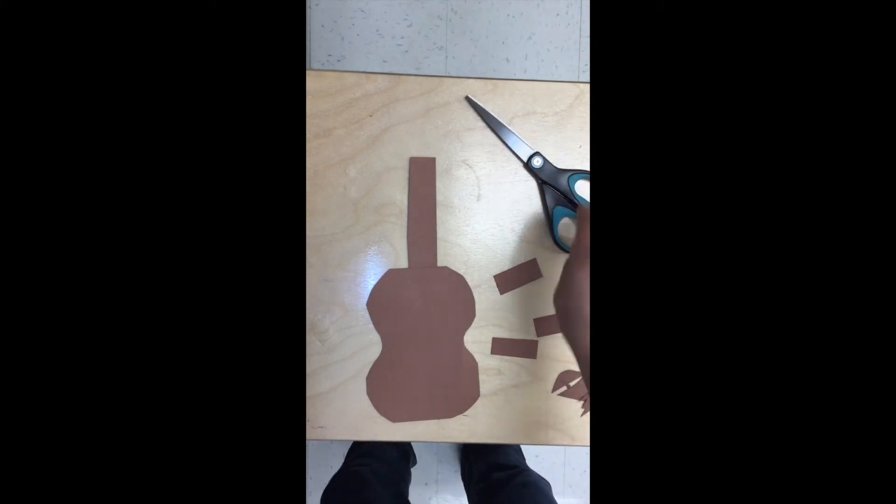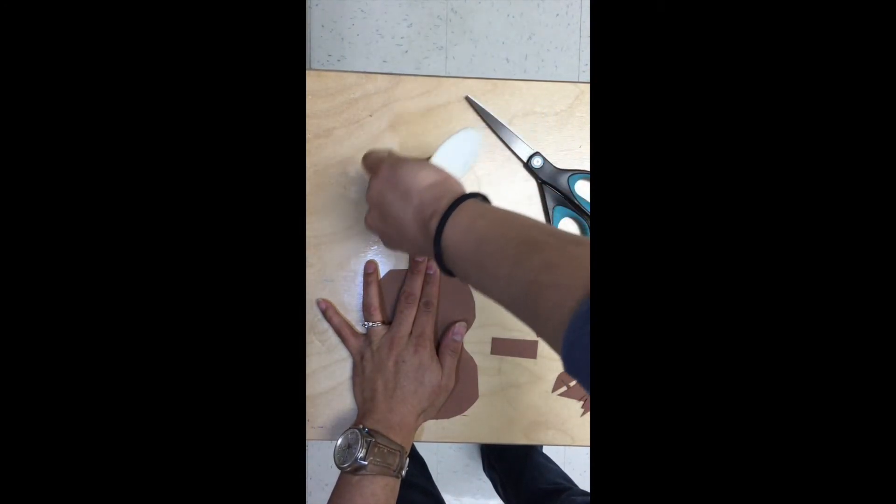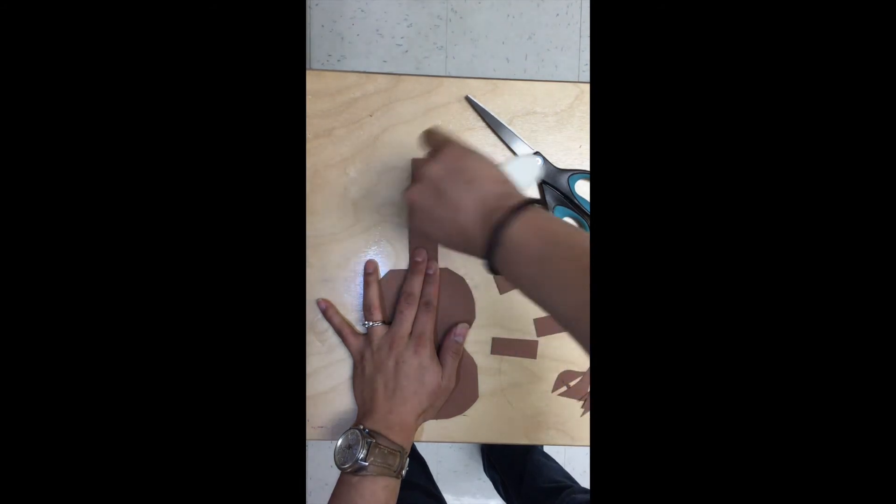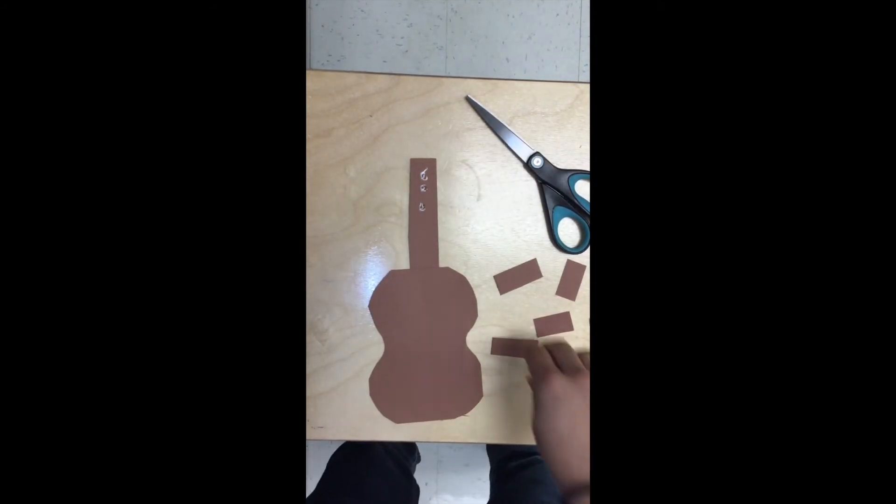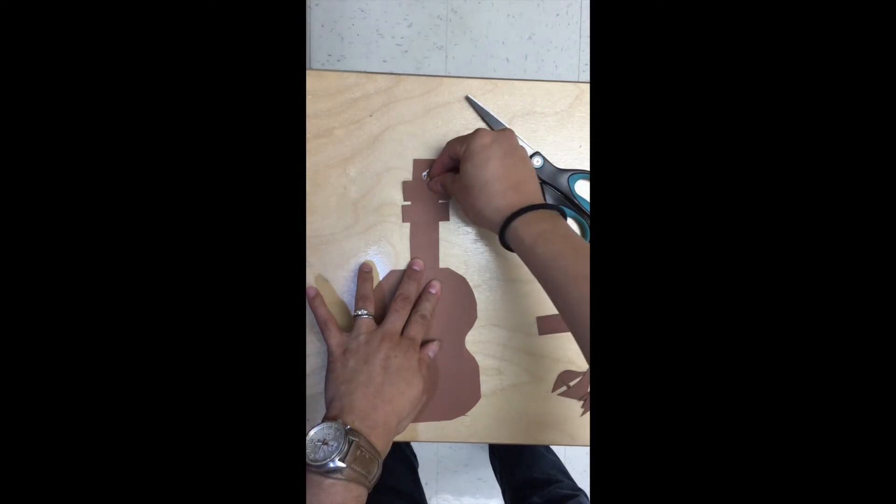Once you have your knobs cut, take that tap glue, tap and squeeze, and lay your little rectangles across the neck. That way they look like the knobs.